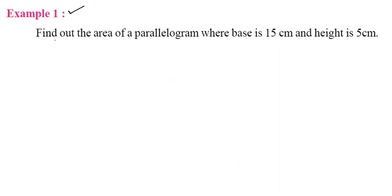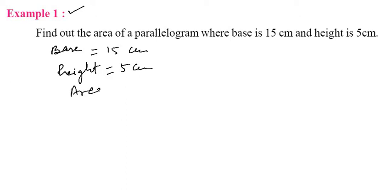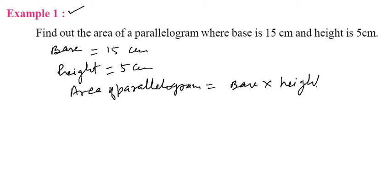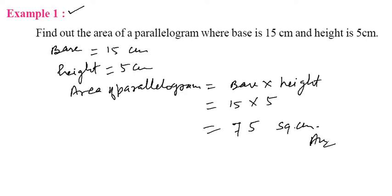Come to Example 1. Find out the area of parallelogram where base is fifteen centimetre and height is five centimetre. Base is equal to fifteen centimetre and height is five centimetre. Area of parallelogram is equal to base into height, that is fifteen into five, which equals seventy-five square centimetre.